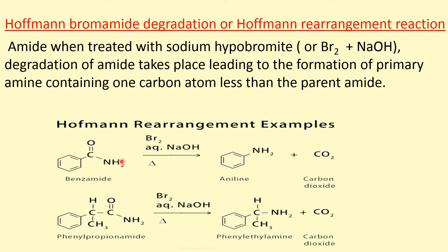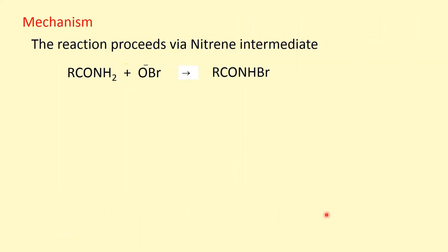The final product, primary amine, has one carbon atom less than that of the substrate acid amide. Now you will see the example. This is benzamide. When it is treated with bromine in aqueous sodium hydroxide or potassium hydroxide, aniline is formed along with carbon dioxide. Now, this reaction proceeds via a nitrene intermediate, so you have to see how this nitrene intermediate forms in the reaction medium.